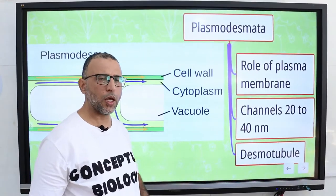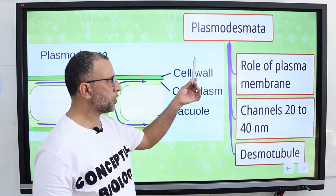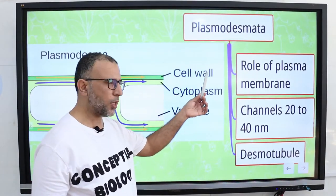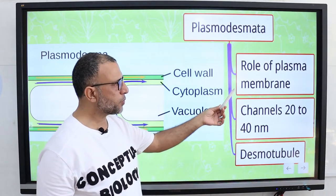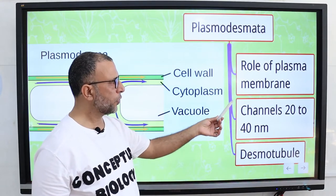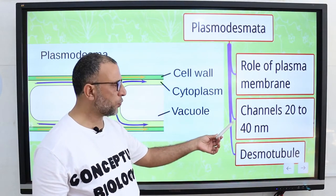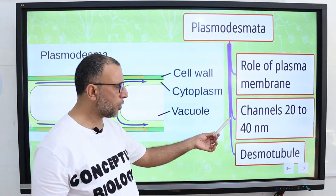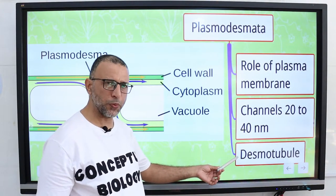In this lecture, I am going to discuss about Plasmodesmata. The main points of the lesson are the role of the plasma membrane, channels with 20 to 40 nanometers in diameter, and the desmotubule.